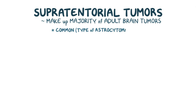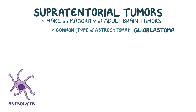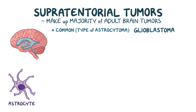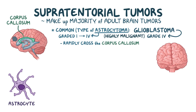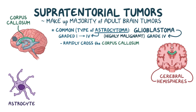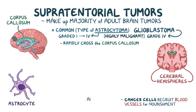A common one is a type of astrocytoma called a glioblastoma. Because astrocytes are found throughout the brain and spinal cord, astrocytomas can form in all of these locations, but glioblastomas are mostly in the cerebral hemispheres. While astrocytomas can be graded 1 through 4, glioblastomas are only grade 4 because they're highly malignant. Because of their quick growth and invasion of nearby tissues, glioblastomas tend to rapidly cross the corpus callosum — the midline structure that separates the two cerebral hemispheres, which looks like a characteristic butterfly on a cross-section of the brain. Cancer cells typically recruit blood vessels to provide nourishment in a process called angiogenesis, but glioblastomas proliferate so fast that even with angiogenesis, their nutrient demand outpaces the blood supply.